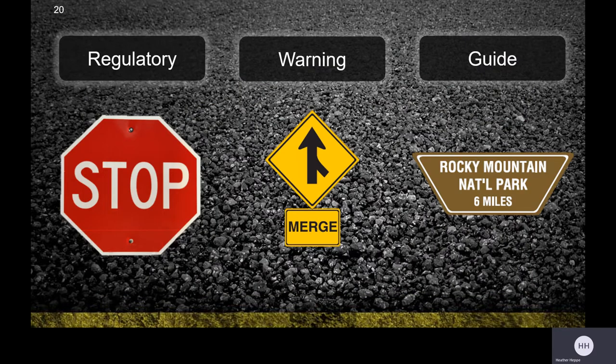Signs are one of the easiest and quickest ways drivers get useful information. Different shapes and colors allow sign meanings to be easily recognized even from a distance. For example, both the shape and color of a stop sign tell you to stop. The color red indicates stop or identifies a significant prohibition. Black and white signs provide regulatory information, and their placement marks where the regulation goes into effect.